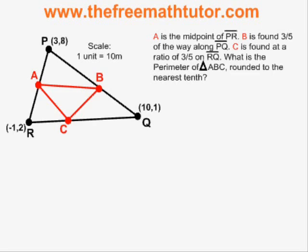In this problem, we have triangle ABC that is inscribed in triangle PQR. We have the vertices of PQR, but not of ABC. Instead, we have some clues as to their locations. A is a midpoint, B is found three-fifths of the way along PQ, and C is found at a ratio of three to five on RQ. We need the perimeter of triangle ABC.